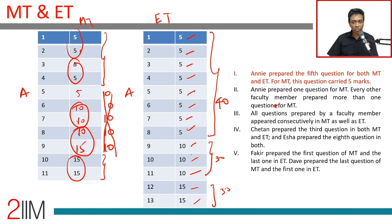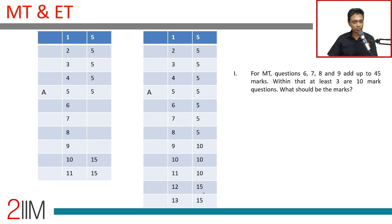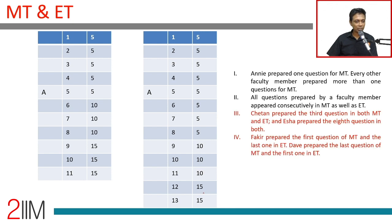Now we fill in the grid. Annie is at position five for both MT and ET. Chetan prepared the third question in both MT and ET, so Chetan is at position three in both.